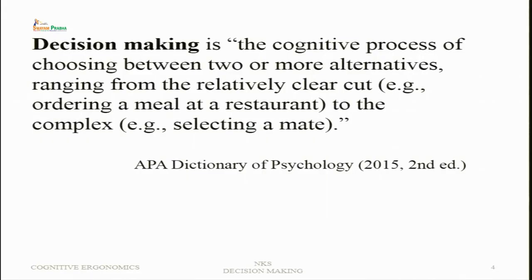What is decision making? It is the cognitive process of choosing. If there is no choice, there is no decision making — if there is only one alternative, decision making is not involved, which will happen very rarely. Most situations are such that there will be choices. The cognitive process of choosing between two or more alternatives ranges from the relatively clear-cut — for example, eating at a restaurant where we know exactly what is available, what will be our satisfaction or utility — to the complex. We know about the alternative, we know what action we are taking, and we know the consequences.